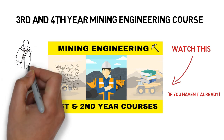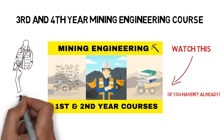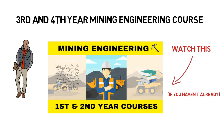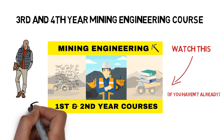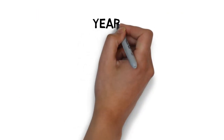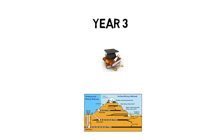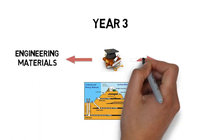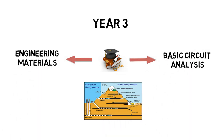3rd and 4th year is the better half of your degree since that's where the interesting classes come in and you can customize your degree to learn more about what you like. In Year 3, over half of your courses are mining courses and it's when you really feel like you're in mining. However, there are some foundational courses you need to take, and they are Engineering Materials and Basic Circuit Analysis.